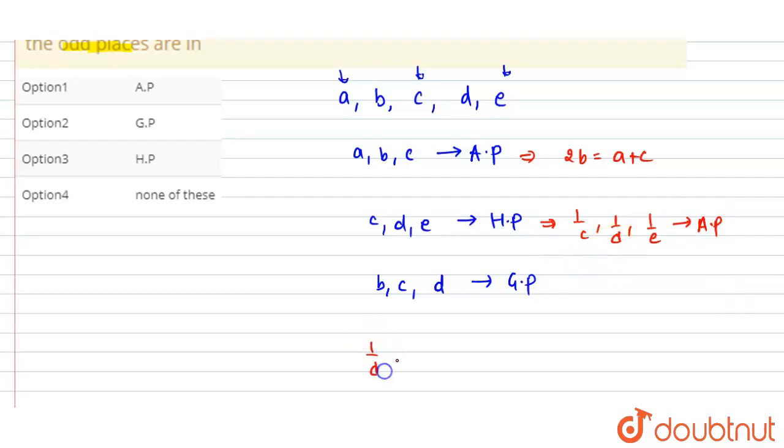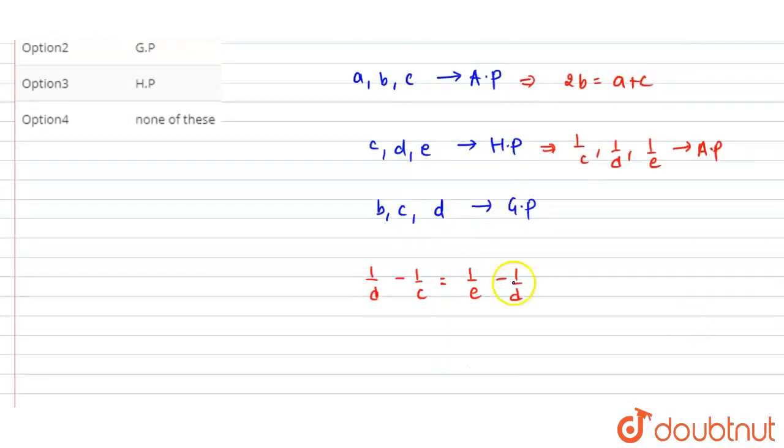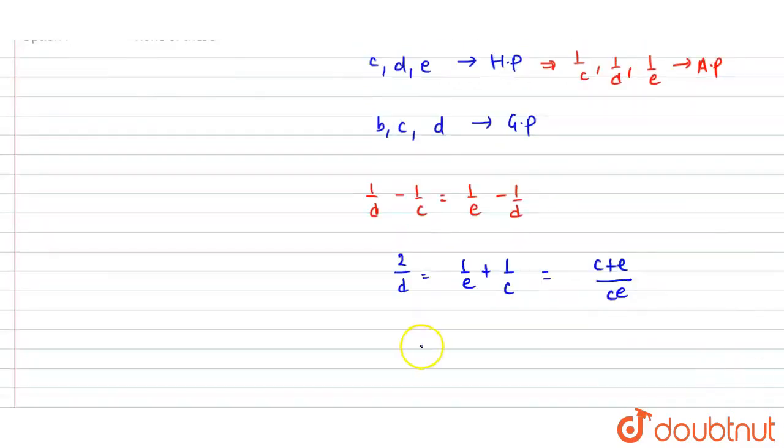The same: 1/D minus 1/C is equal to 1/E minus 1/D. Common difference, which will be the difference between these two consecutive differences. So I will write it here. So this will be 2/D and is equal to 1/E plus 1/C. This means (C+E) divided by CE.